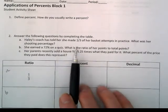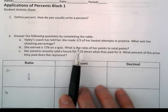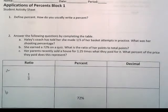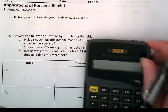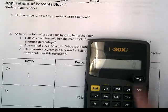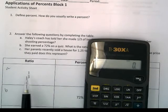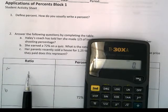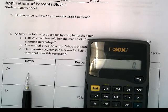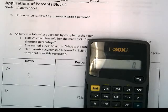Haley's coach has told her she made one-third of her basket attempts in practice. What was her shooting percentage? We'll turn a fraction into a decimal and into a percent. We're going to use our calculators. You start by using the fraction or the ratio as a division problem. You always read them from top to bottom. So 1 divided by 3. Into your calculator, you enter 1 divided by 3.